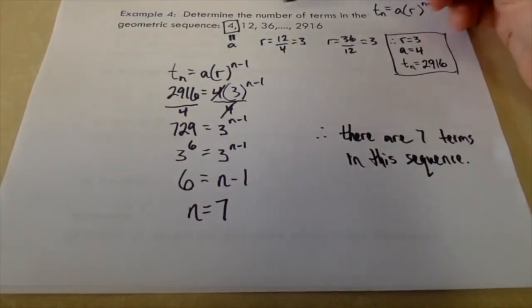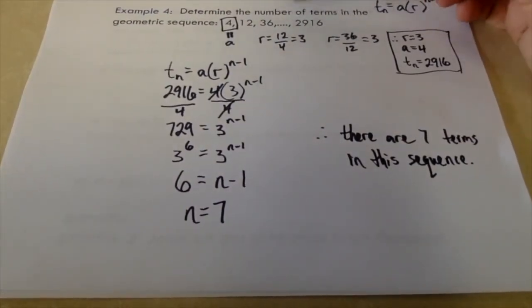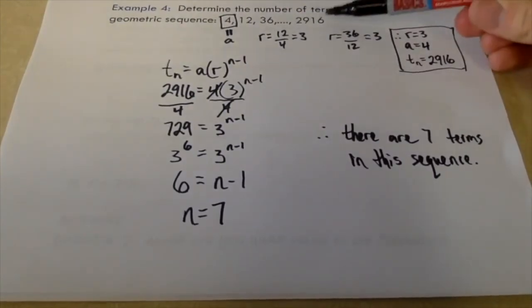And if you wanted to check, what we could do is we could multiply by 3, multiply by 3, multiply by 3, until we've done that seven times, and we should get this number.